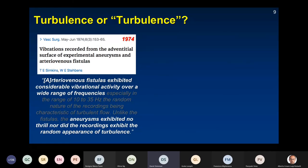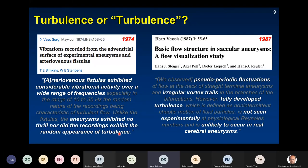Not everyone agreed. A 1974 paper using animal models of arteriovenous fistulas and aneurysms found that AV fistulas showed considerable vibration activity over a wide range of frequencies characteristic of turbulence, but aneurysms exhibited no such sounds or the random appearance of turbulence. A 1987 model study in saccular aneurysms reported pseudoperiodic fluctuations and irregular vortex trails — basically laminar vortex shedding, but not fully developed turbulence — and concluded this was unlikely to occur in vivo.